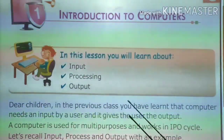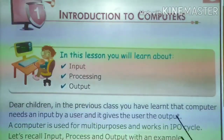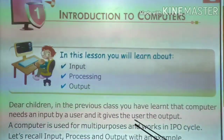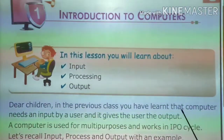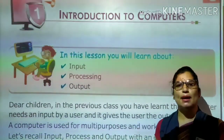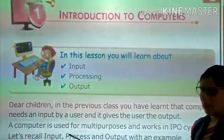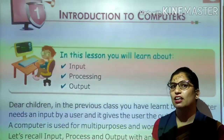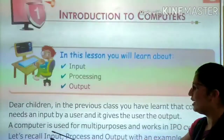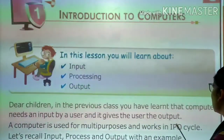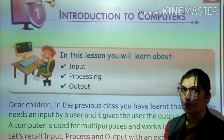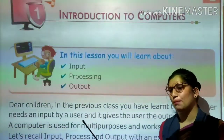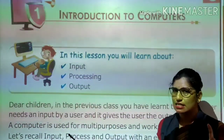Dear children, in the previous class we have learnt that a computer needs an input from a user and it gives the user the output. A computer is a machine in which we provide input, it processes it, and we get output. A computer is a multi-purpose machine which works in the IPO cycle.